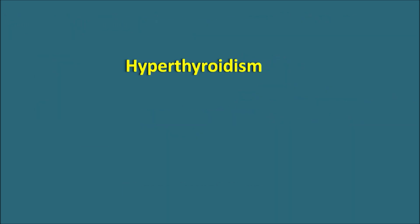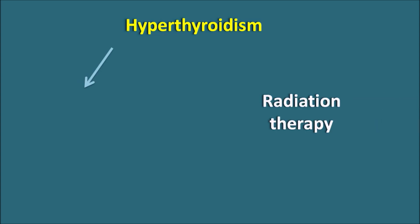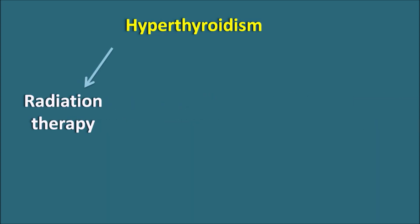What are the various approaches to control hyperthyroidism? Whenever thyroid hormones are excessively released because of the enlargement of the thyroid gland, we can use radiation therapy, which uses radioiodine — iodine-131 — that releases beta radiation, causing the destruction of the thyroid follicles, thereby decreasing hyperthyroidism.